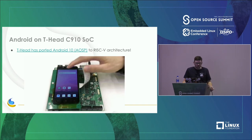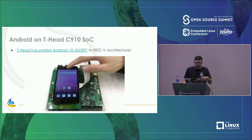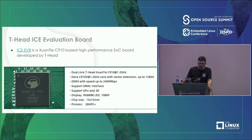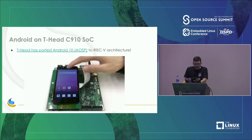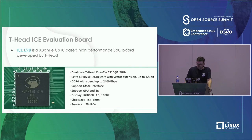Alibaba T-Head surprised everyone in January when they announced they ported Android to a test chip with this design — at the time, no one really thought we were close to having Android running in any meaningful way on RISC-V. If you click the link it takes you to the GitHub repo. There is now an Android special interest group with RISC-V International that has meetings to push this forward. The ICE board is a low-quantity test board with this test SoC containing two C910 cores.